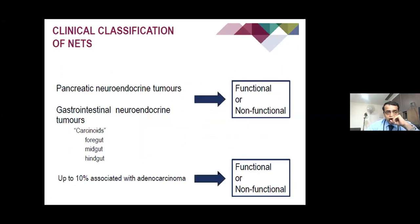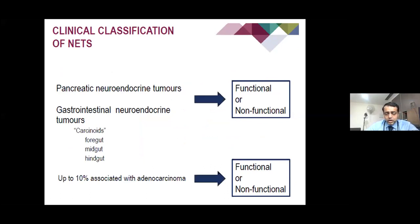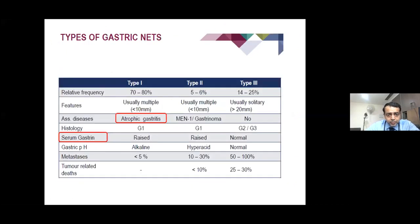The clinical classification distinguishes pancreatic neuroendocrine tumours from gastrointestinal neuroendocrine tumours, which are further divided into foregut, midgut, and hindgut. They may be functional or non-functional. About 10% may have adenocarcinomas hiding within them.